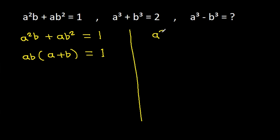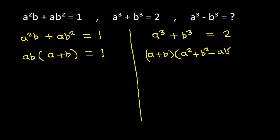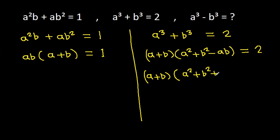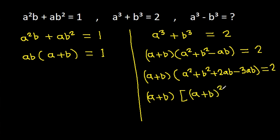And we have a cubed plus b cubed is equal to 2. We use the identity: a cubed plus b cubed equals (a plus b)(a squared plus b squared minus ab), which equals 2. Expanding, this becomes (a plus b)(a squared plus b squared plus 2ab minus 3ab) equals 2, that is (a plus b)(a squared minus 3ab) equals 2.